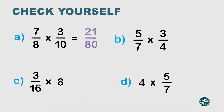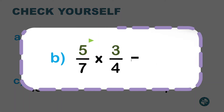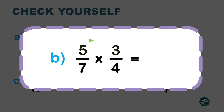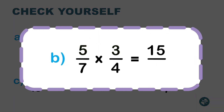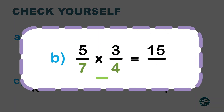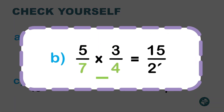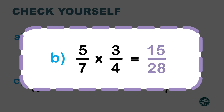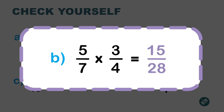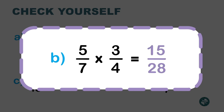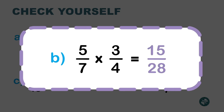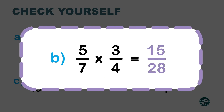Let's do the second exercise: 5 times 3 is 15, and 7 times 4 is 28. Is there any number that can divide both 15 and 28 so I can simplify my fraction? No.